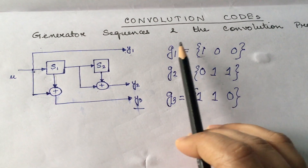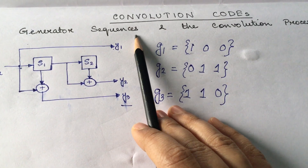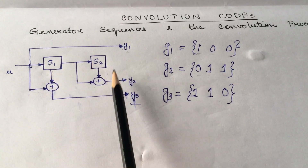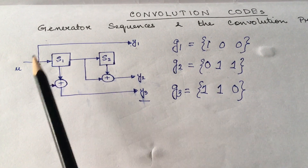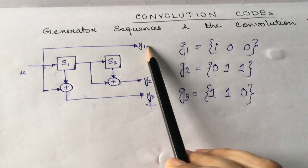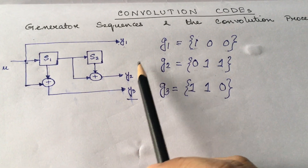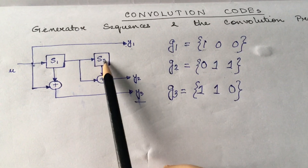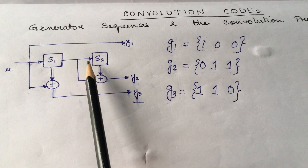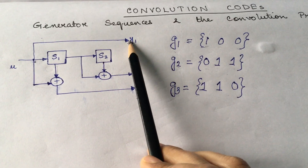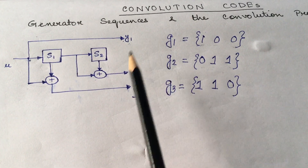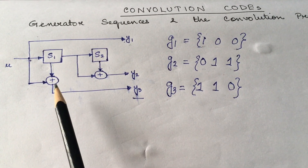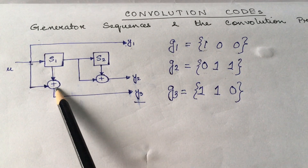In this video we are going to see how we can find out the generator sequences for a given convolutional encoder and what is the convolution process. We have an encoder structure here. U is the incoming message bit stream. Y1, Y2, and Y3 are the three output bits corresponding to each input bit, so this is a rate 1/3 encoder. We have two shift registers S1 and S2, so the memory order is 2. Y1 is directly connected to the incoming message bit stream. Y2 is generated from S1 and S2 XOR operation. Y3 is generated from the XOR operation between the incoming bit and the contents of shift register S1.